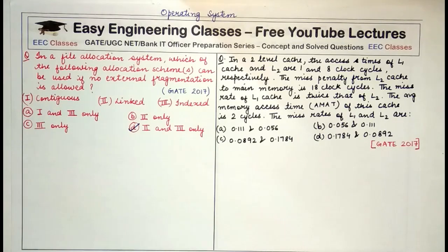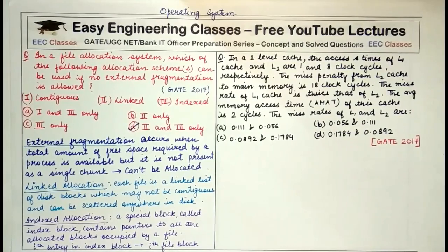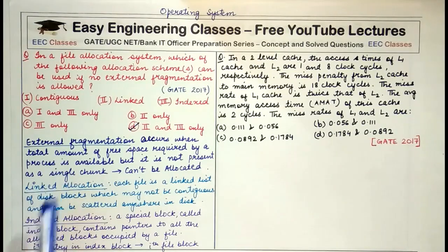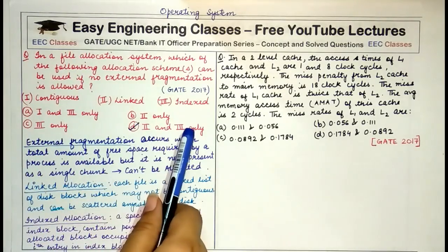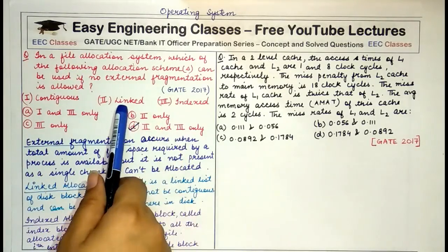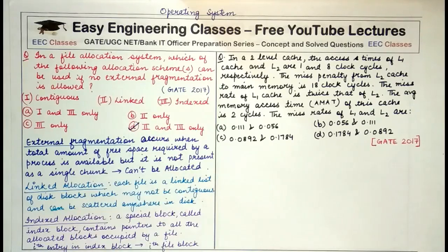As I have written here, these are the definitions of external fragmentation, linked allocation, indexed allocation, and contiguous allocation. So the answer to this question is options 2 and 3 — linked and indexed allocation do not suffer from external fragmentation.